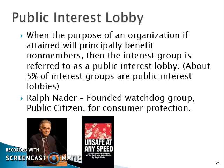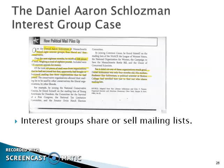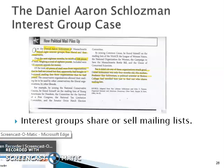Ralph Nader ran for president and is one of the best examples of an individual who reached out and did something for the public good, not necessarily for his own private good — and that's what public interest lobbies do, truly altruistic organizations. Now I want to talk about the case of Daniel Aaron Scholzman. One day, Daniel Aaron Scholzman of Massachusetts joined eight interest groups — four liberal and four conservative. Over the next 18 months he received 248 pieces of mail weighing 18 pounds total, including 135 separate appeals for money.